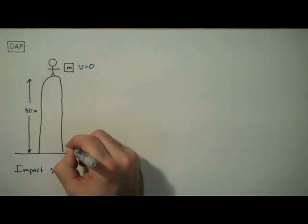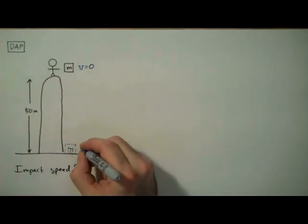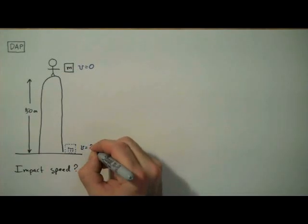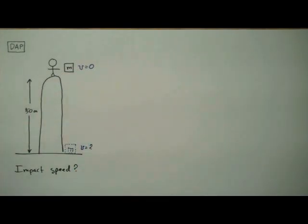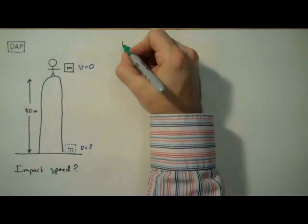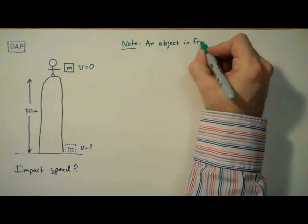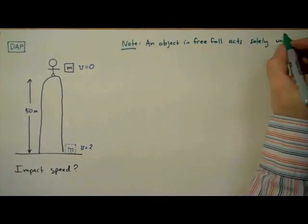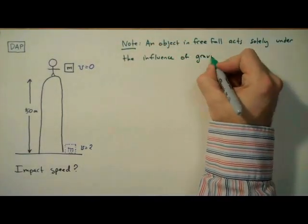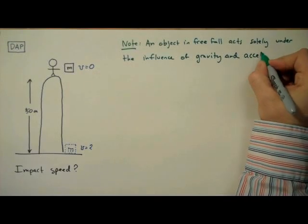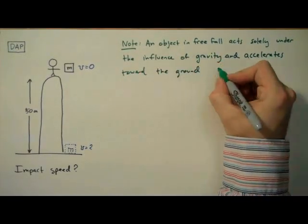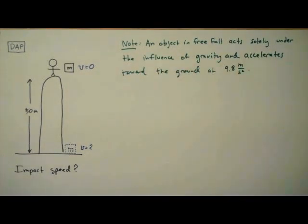So we're given the initial velocity by implication. We're also given the acceleration of this object by implication. We said that the object was dropped, and that means the object is in free fall. And an object in free fall acts solely under the influence of gravity and accelerates toward the ground at a rate of 9.8 meters per second per second.